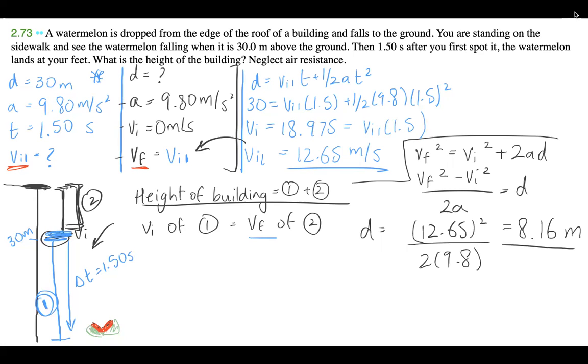If we want to determine what the total height of the building is, it's going to be the height that we first determined and this additional height from where it first fell from, or the top of the building, the top portion.